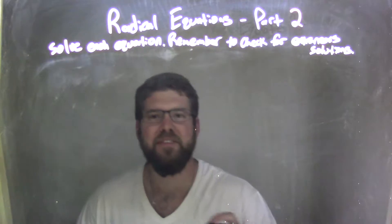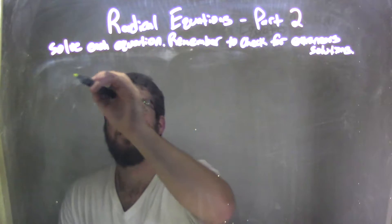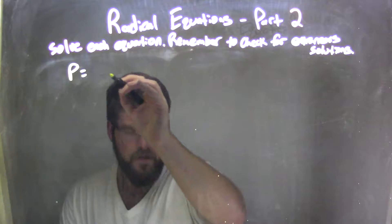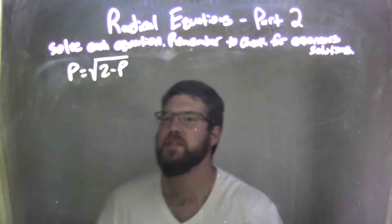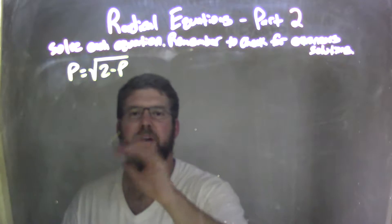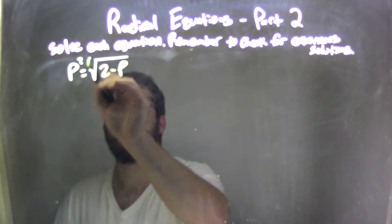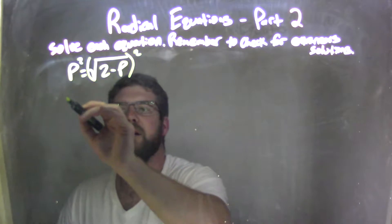So if I was given this equation, p equals the square root of 2 minus p. Well, first step is I'm going to square both sides to get rid of that radical. So by squaring both sides here, p squared just comes down.